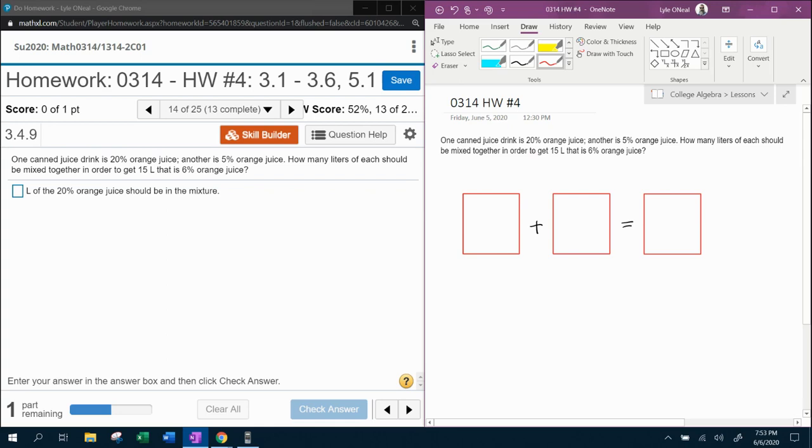I'm going to show you how to break this down and set up your equations here. Let's start with one canned juice, 20% OJ. So that's going to be my first can is 20%. Another, the second can is 5%. And then it says how many liters of each should be mixed. The mixture, we need to get 15 liters that is 6% OJ.